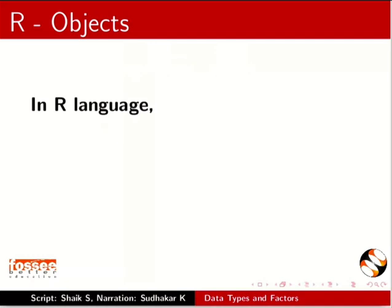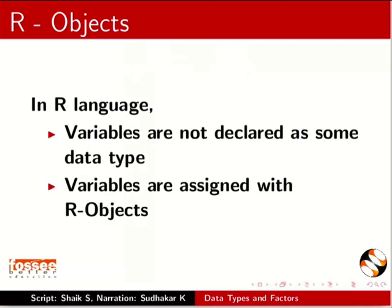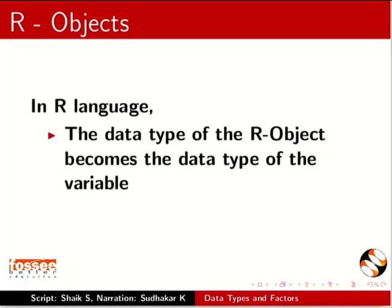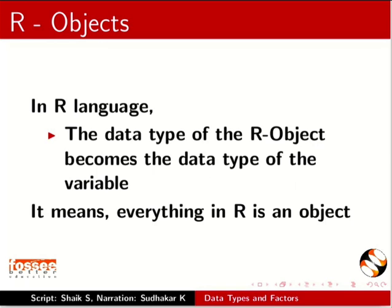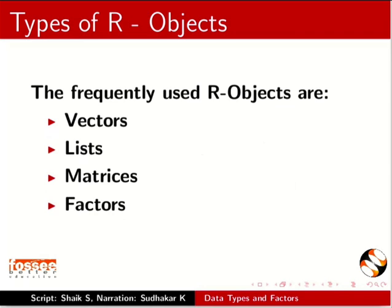In R programming language, variables are not declared as some data type. Variables are assigned with R objects, and the data type of the R object becomes the data type of the variable. This means everything in R is an object. The frequently used R objects are Vectors, Lists, Matrices, Factors, and Data Frames.